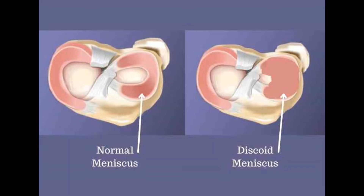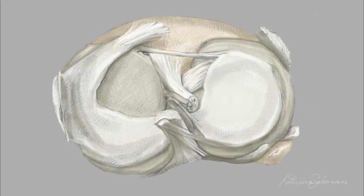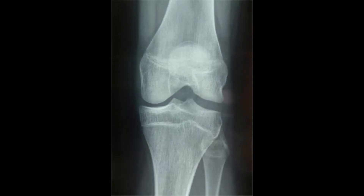The patient is usually in his or her adolescence and complains of pain in the knee with clicking and mechanical locking sensation. X-ray might show widening of the joint space with squaring of the lateral condyle and cupping of the lateral tibial plateau with hypoplastic lateral intercondylar spine.